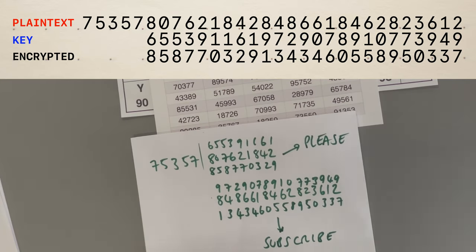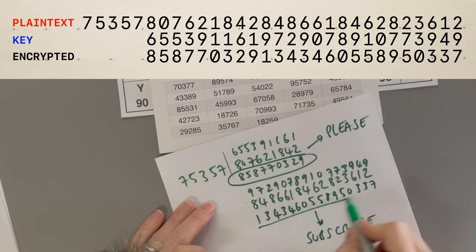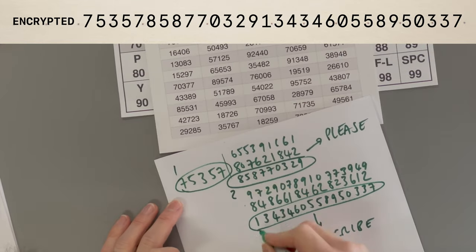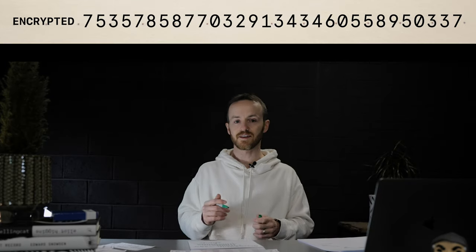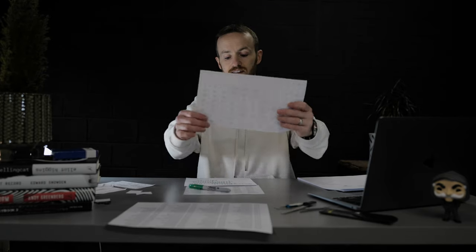So now we send those numbers, this bottom group, this bottom group and the key first, one, two, three, just like that. Any method we want: Morse code, an Instagram picture with the numbers in it, doesn't really matter. They get it at the other end, do the decryption, use their sheet, and then hopefully they'll subscribe.